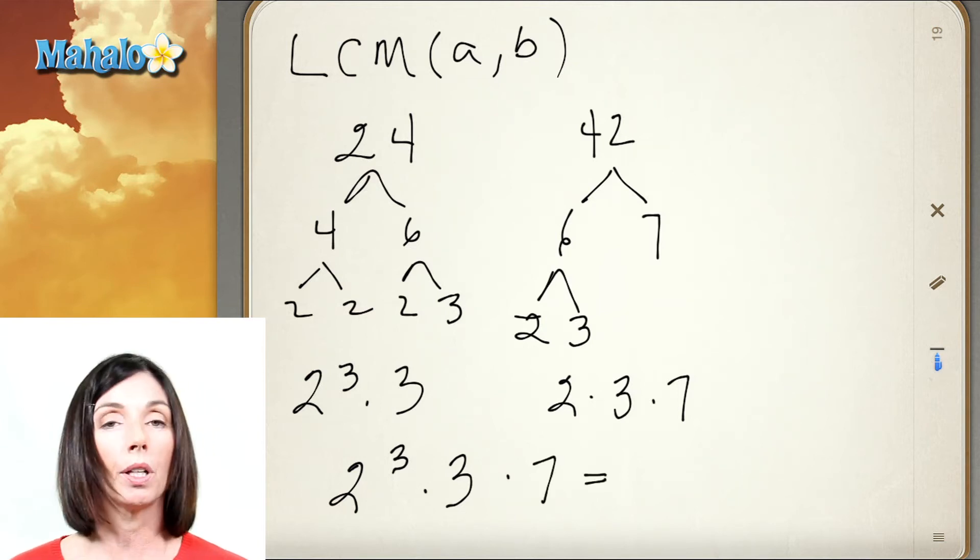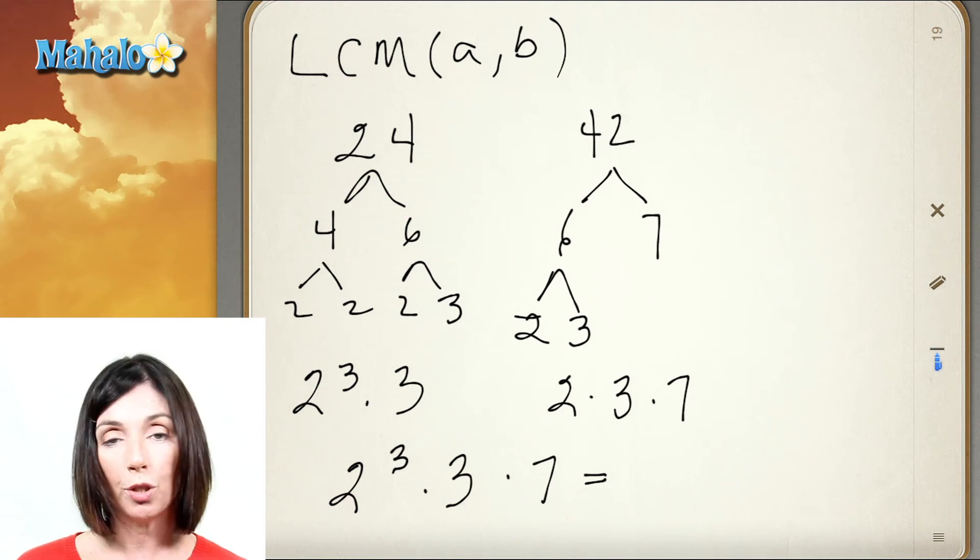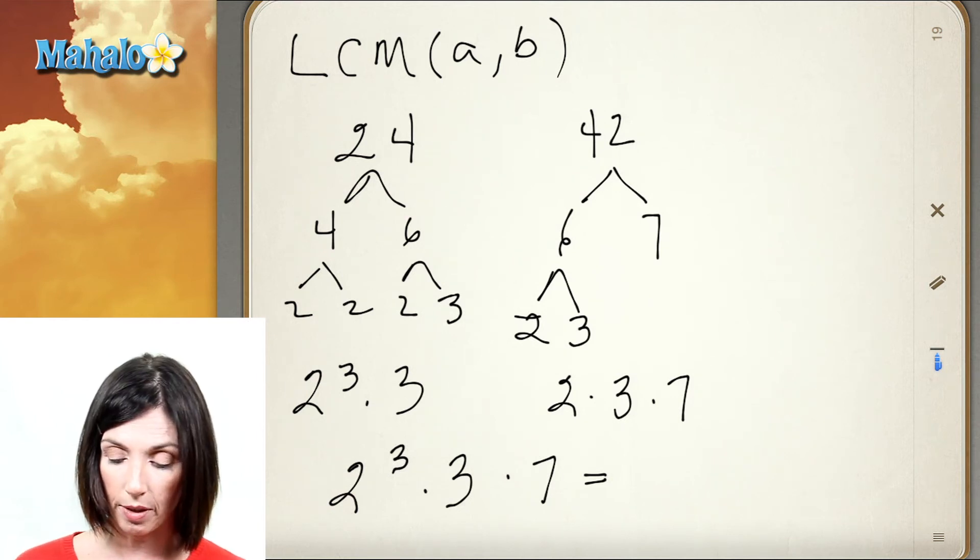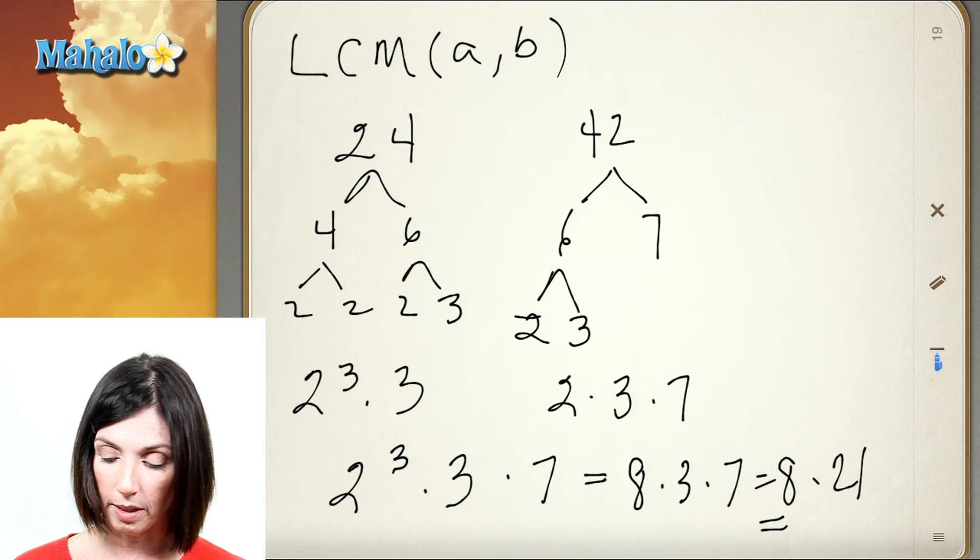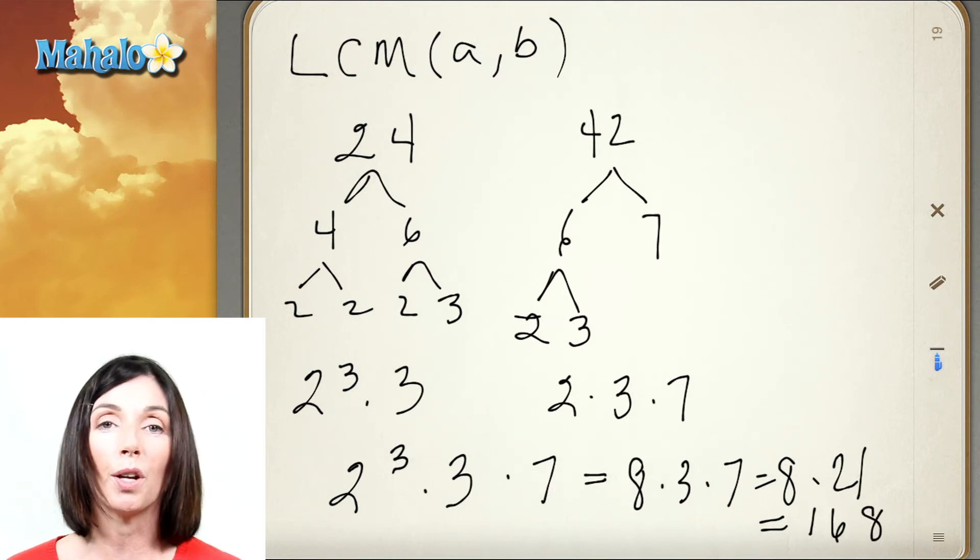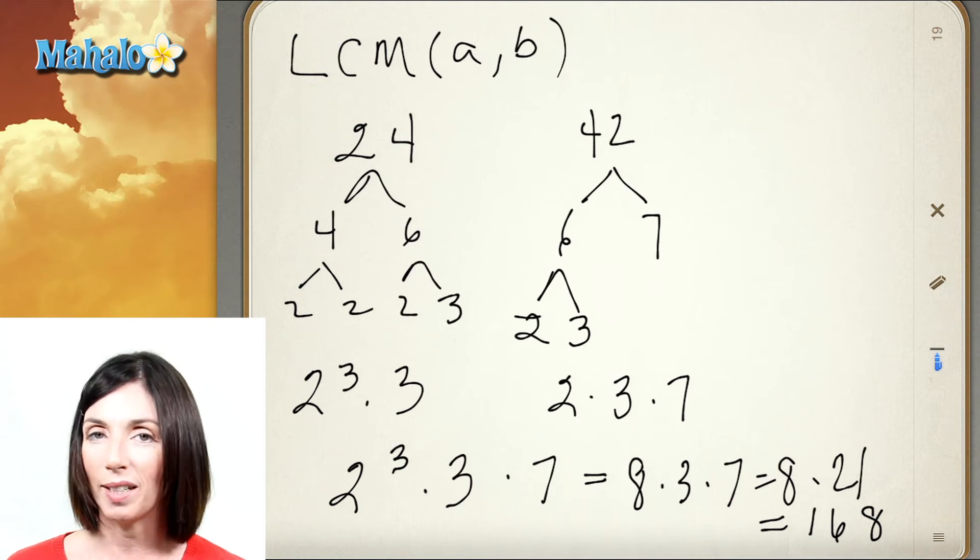So the least common multiple of 24 and 42 will be 2 cubed times 3 times 7. So that's 8 times 3 times 7 or 8 times 21, and 8 times 21 is 168. So the least common multiple of 24 and 42 is 168.